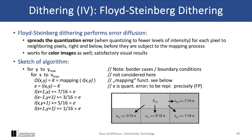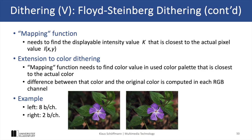An improved dithering algorithm is Floyd-Steinberg dithering, which distributes quantization errors to neighboring pixels, creating a smoother and more visually appealing result. The idea is to compute the error of the mapping from the pixel value to the pattern and distribute it to the surrounding pixels: 7 out of 16 amounts go to the pixel on the right, 5 out of 16 go to the pixel below, and so on. The result can be seen on the next slide, where we use 256 colors for the original image on the left and only 4 colors for the image on the right, which is a remarkably good approximation given this compromise.